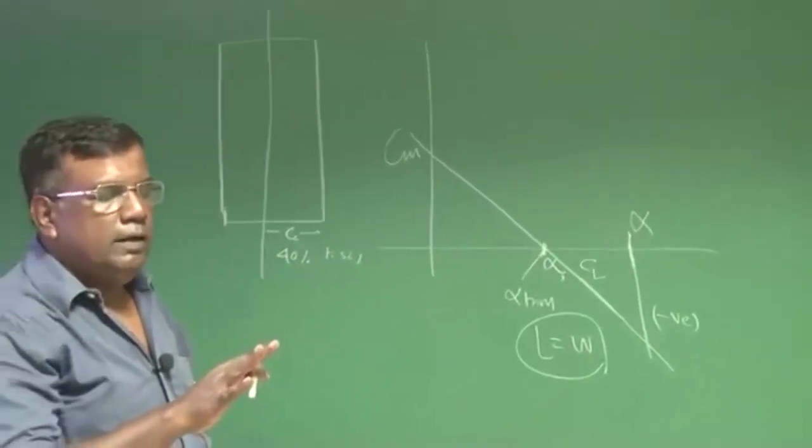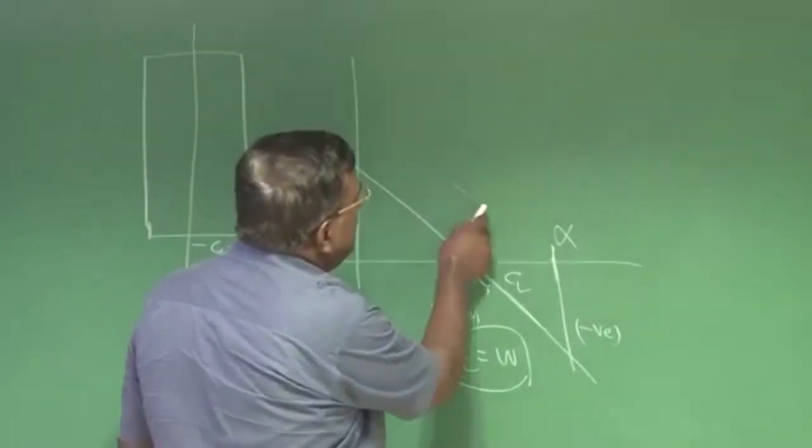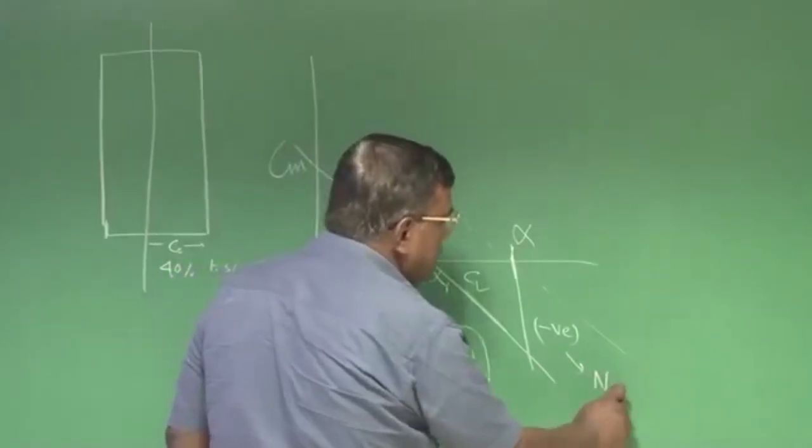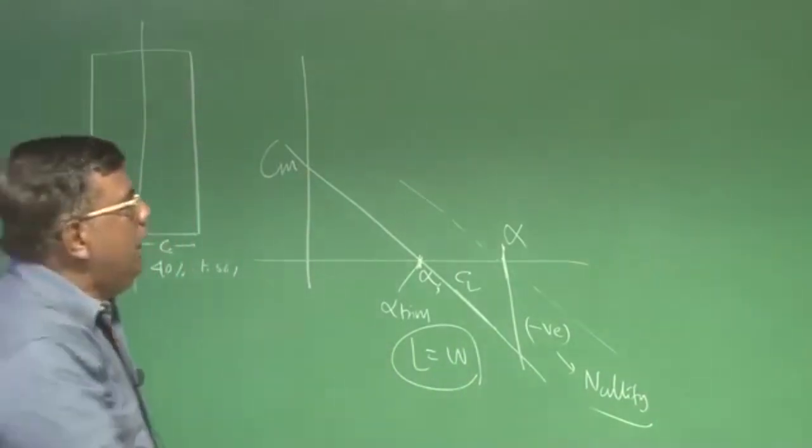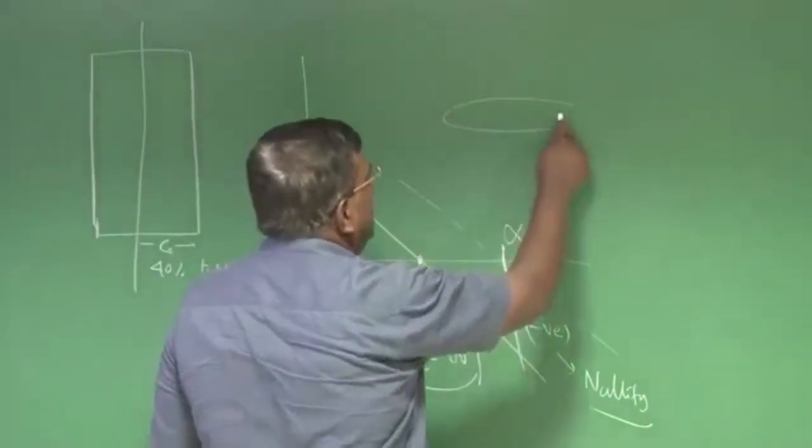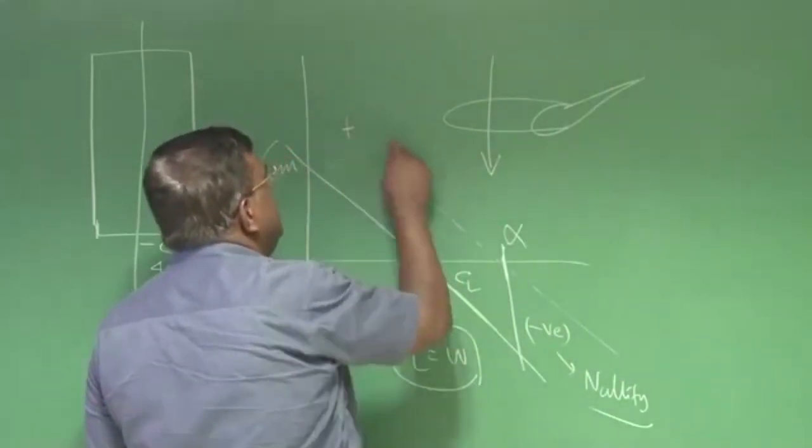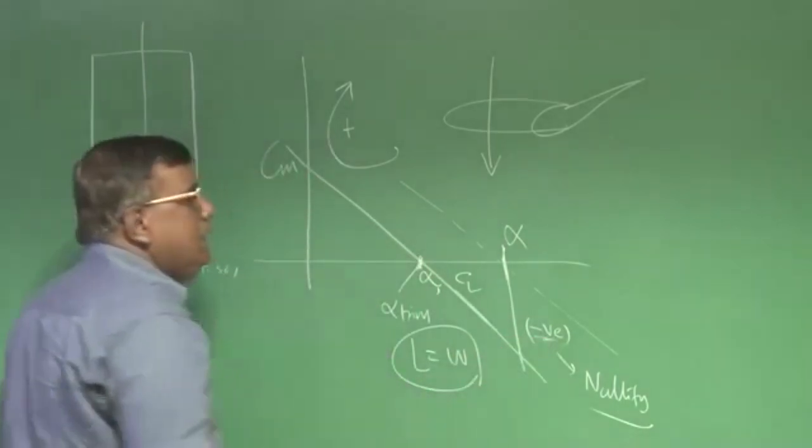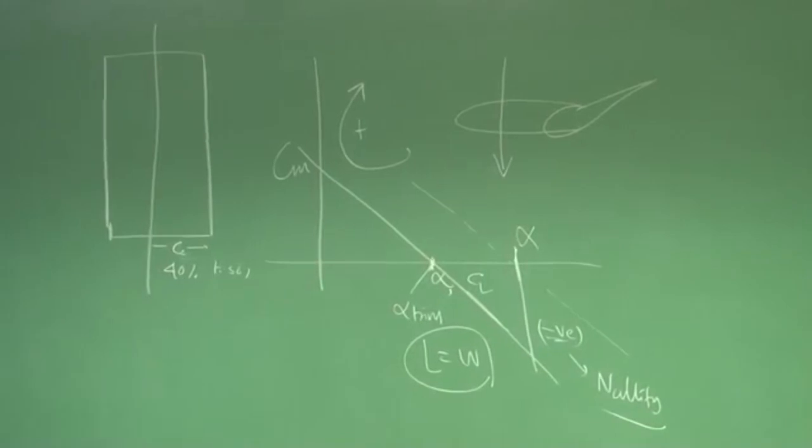So if you want to increase alpha, it will automatically generate negative pitching moment. But if you want to really fly here, trim the airplane here, somehow you have to nullify this moment. How can I do that? I do it by using elevator. I will deflect the elevator up, but then there will be force downward and CG somewhere here, so it will produce a nose up moment and that should equal the negative moment generated inherently by the airplane being statically stable.